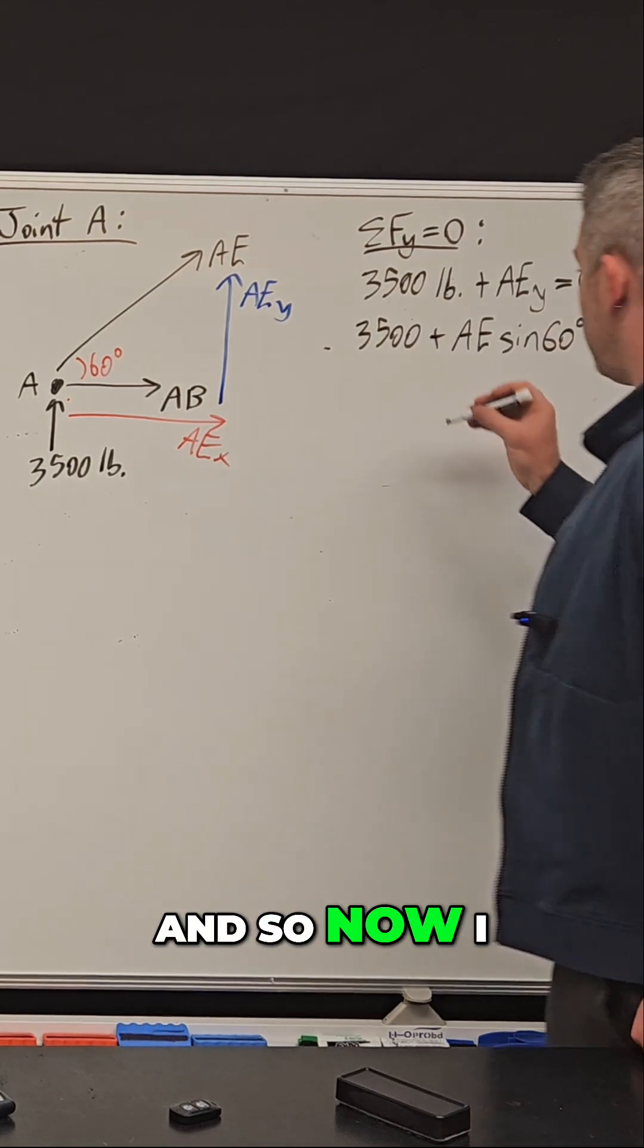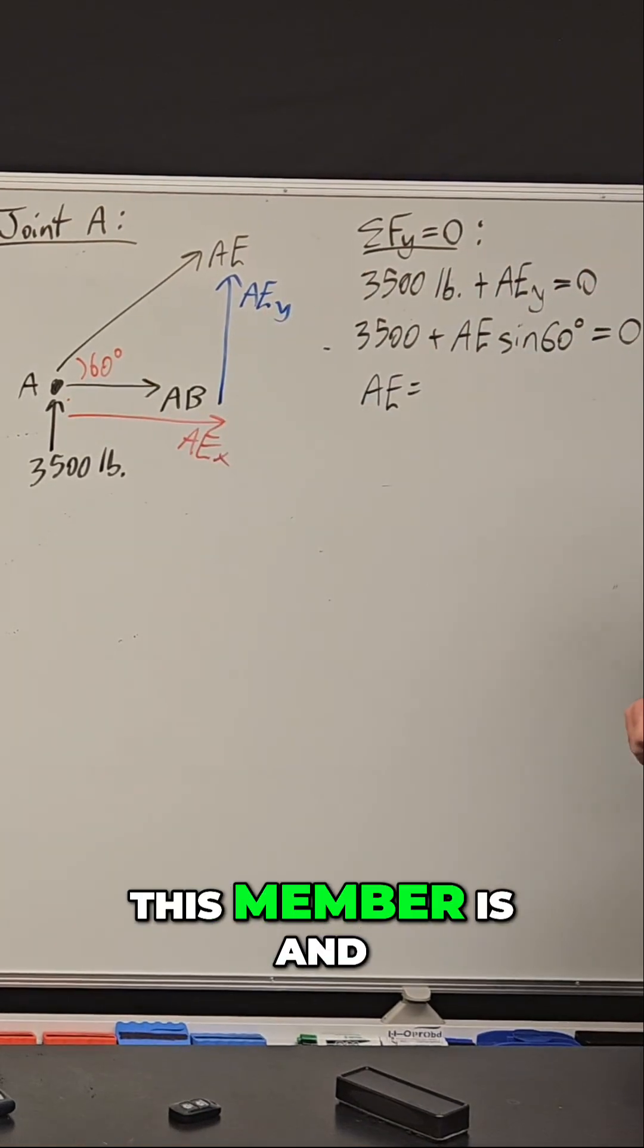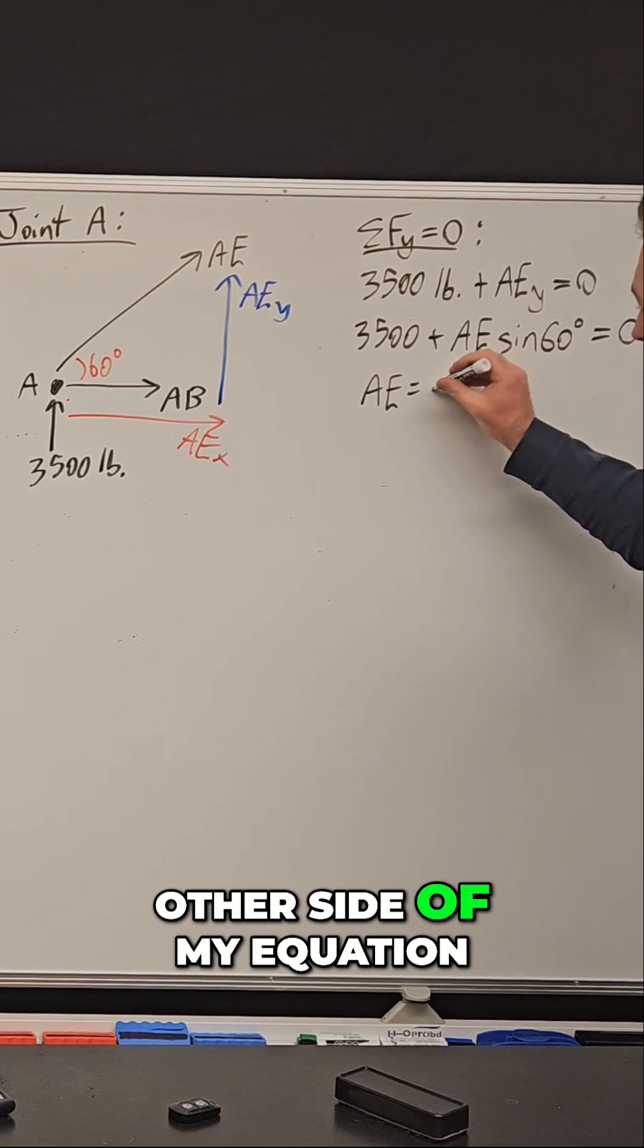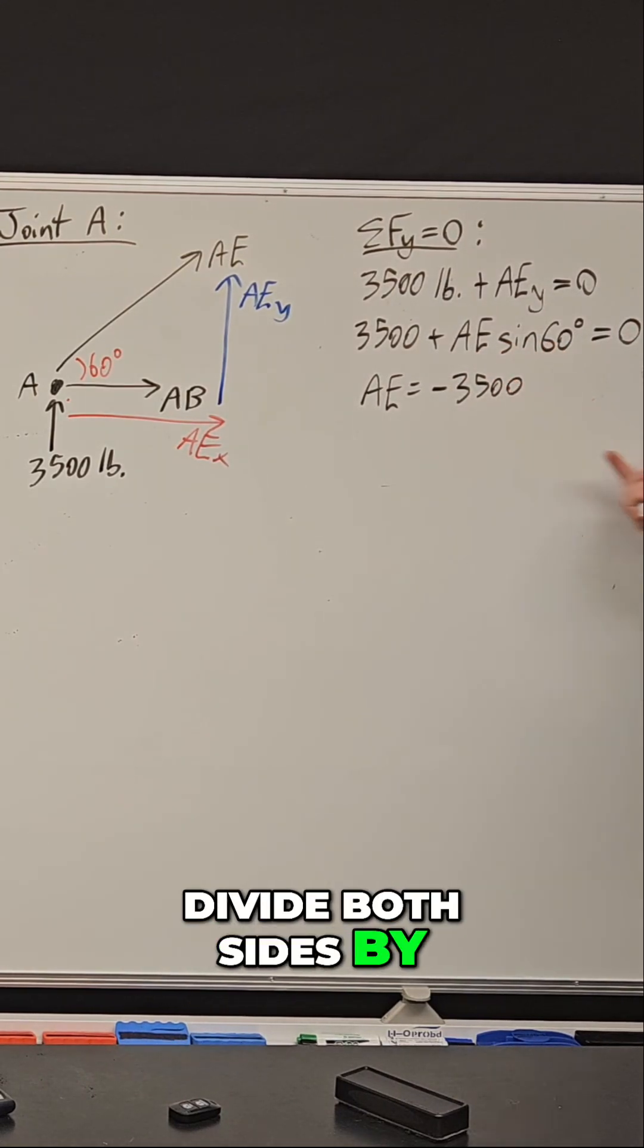And so now I can say AE, the actual force of this member, is - and I'm gonna subtract 3500, so it's on the other side of my equation. And then I'm gonna divide both sides by the sine of 60.